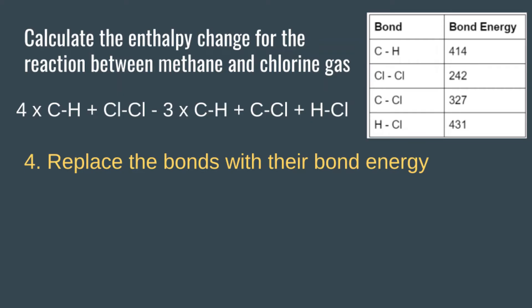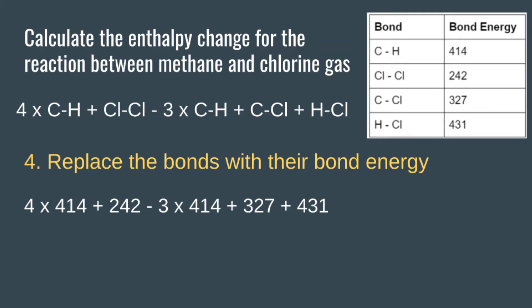Once you have all of the bonds and the number of each bond written out, you can replace the bonds with their bond energy. In this case the C-H bond has a bond energy of 414, so we have 4 × 414. The Cl-Cl bond has a bond energy of 242.